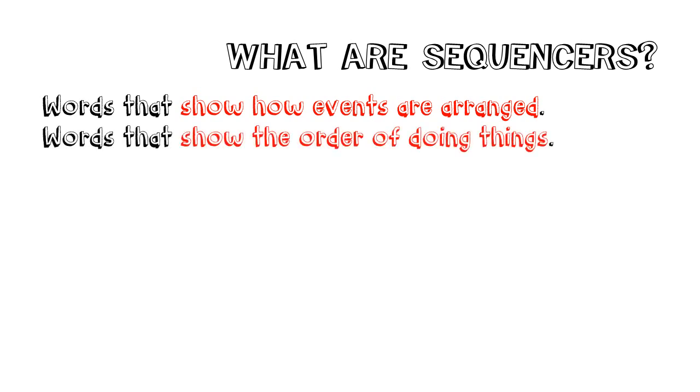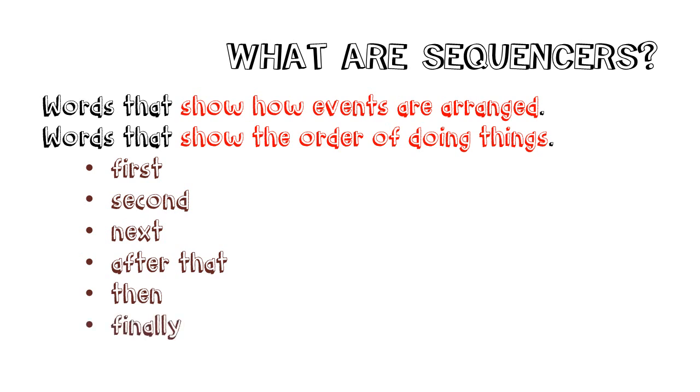Sequences are also words that show the order of doing things. So it's like telling how something happens from the beginning to the end. Some examples of sequences are first, second, next, after that, then, and finally. But of course there are so many words, so many other sequences. Your challenge is, can you find some other examples of sequences?